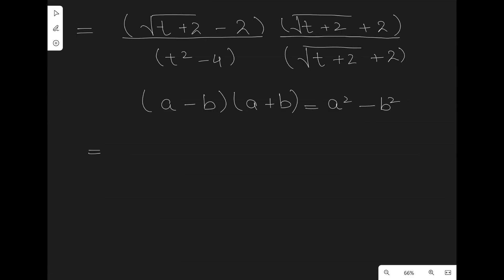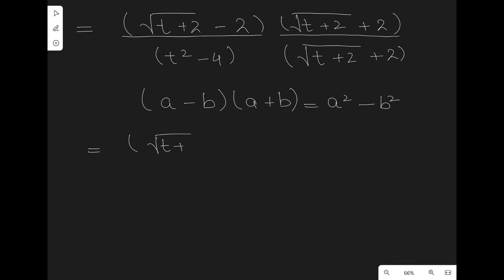Now, we can also write it as (√(t+2))² minus (2)² divided by